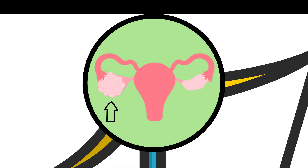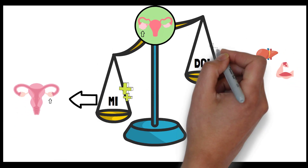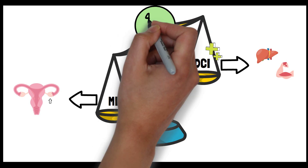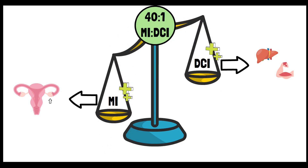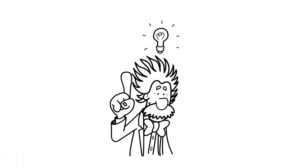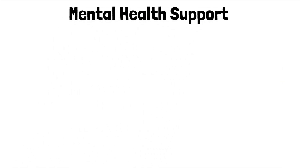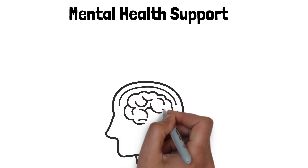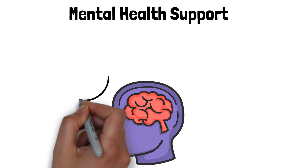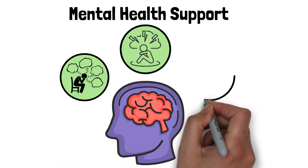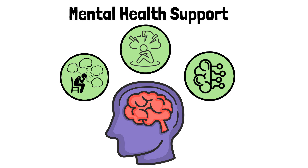Studies suggest that in certain conditions, supplementing with a specific ratio of MI to DCI can be beneficial. A commonly cited ratio for PCOS treatment is 40 to 1. Inositol is most known for its role in PCOS, but it also supports your body in other ways. One key area is mental health support — inositol has shown promise in treating certain mental health conditions, helping to reduce symptoms of depression, anxiety, and panic disorder by influencing the action of neurotransmitters, which play a key role in mood regulation.